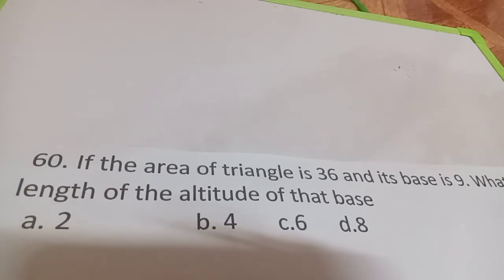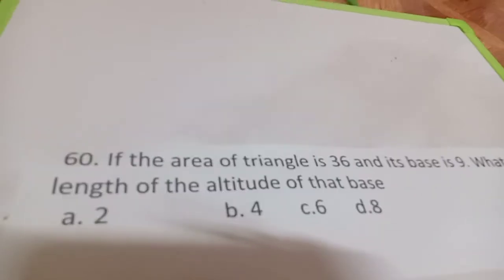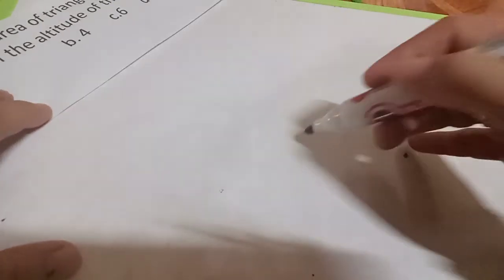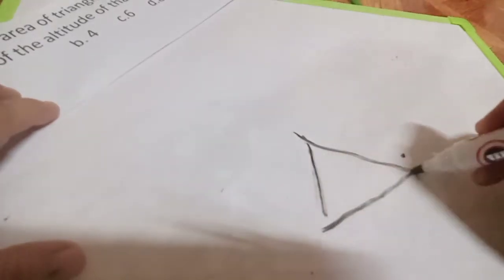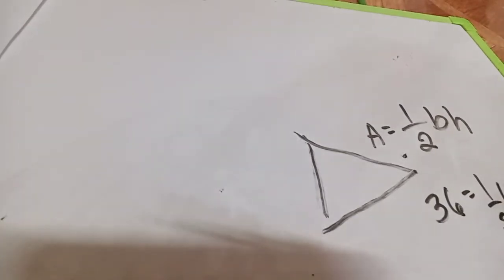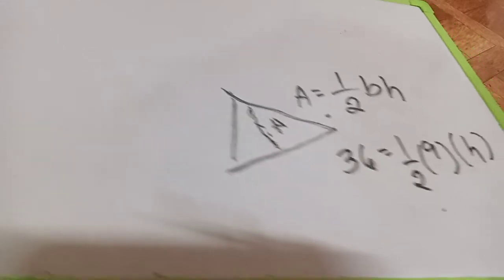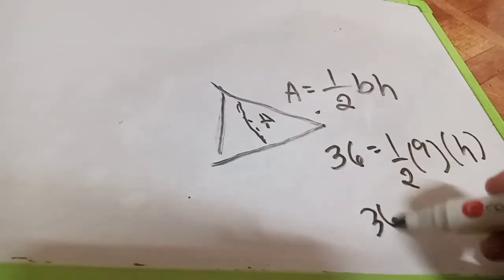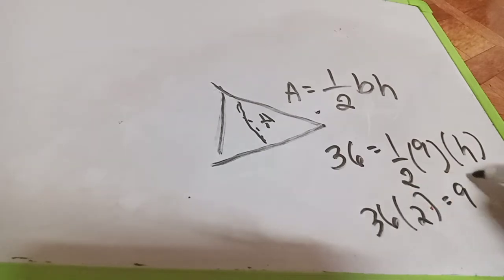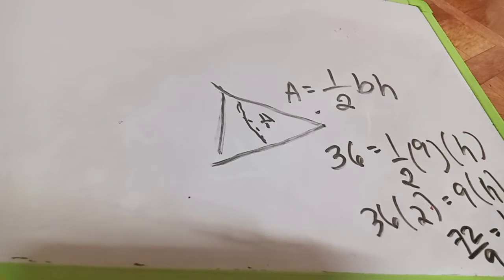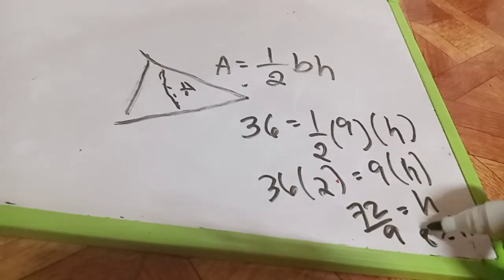If the area of a triangle is 36 and its base is 9, what is the length of the altitude to that base? We need to recall the area of the triangle. The formula is: Area = one-half times base times height. Area is 36, base is 9, and we solve for height. Cross-multiplying: 9 times height equals 36 times 2, which is 72. Divided by 9, our height — or altitude — is 8.